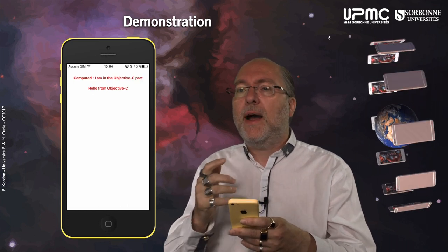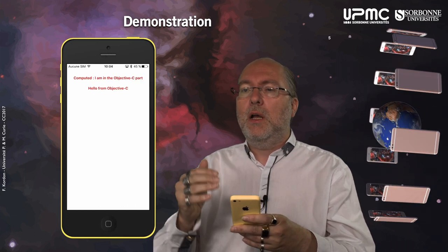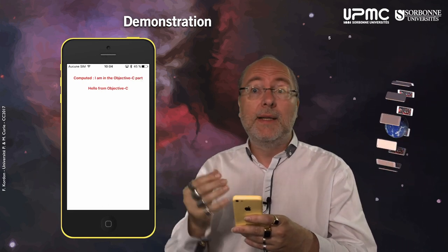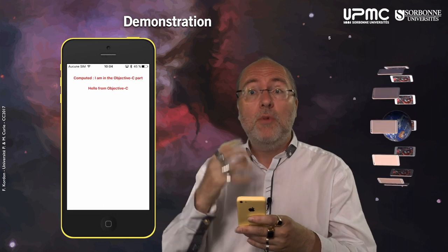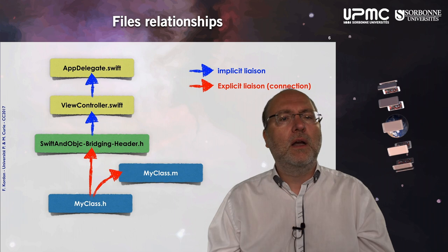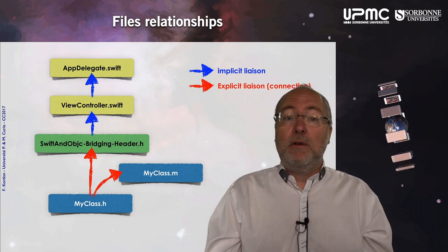Let's have a very quick look on what this application is doing. It's just displaying things. But as you can imagine, the information that is displayed on the labels is retrieved from Objective-C code. Let's have a look on the file relationships.